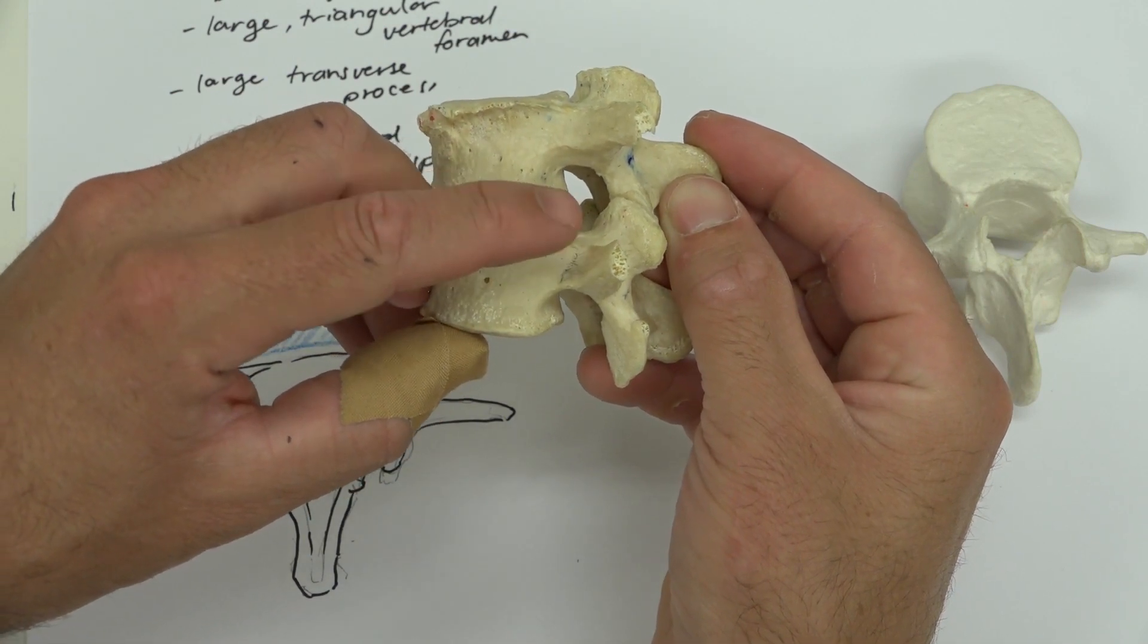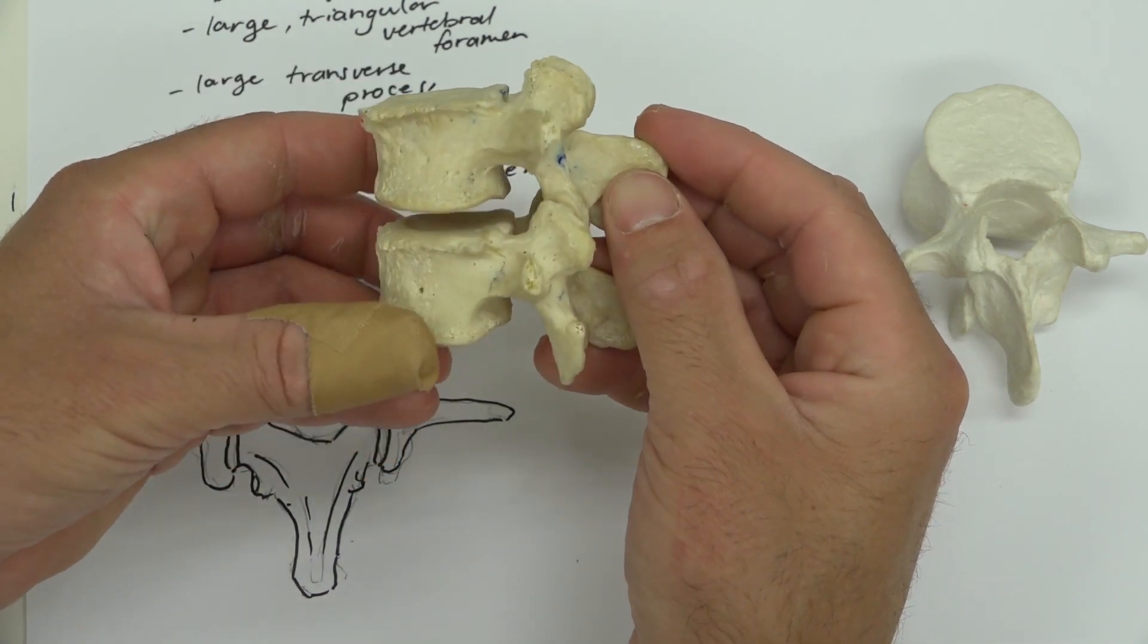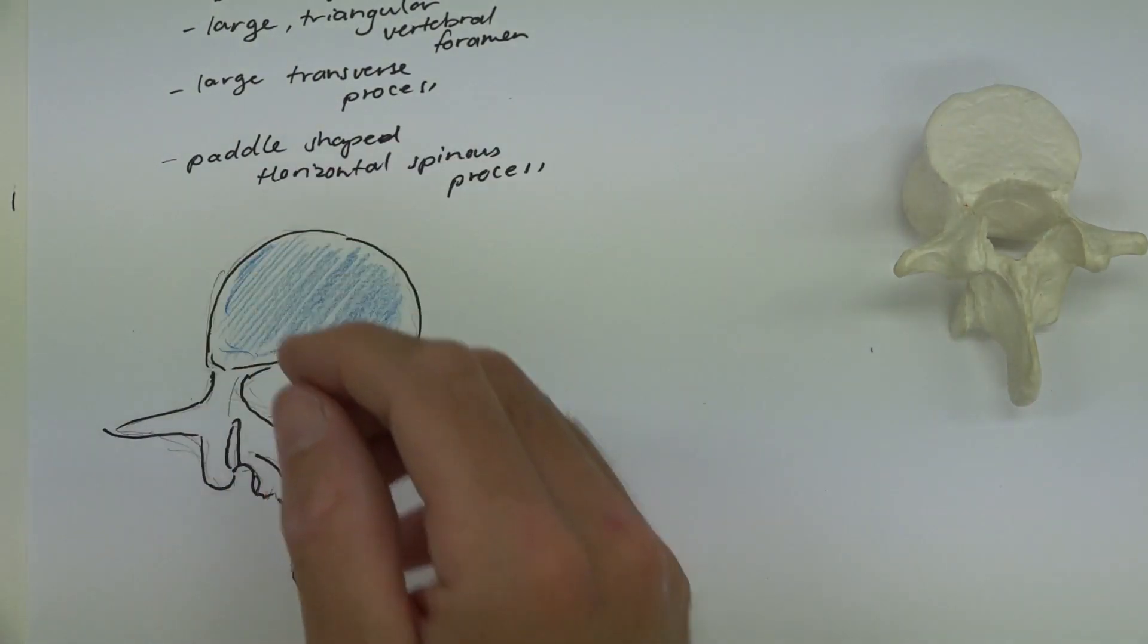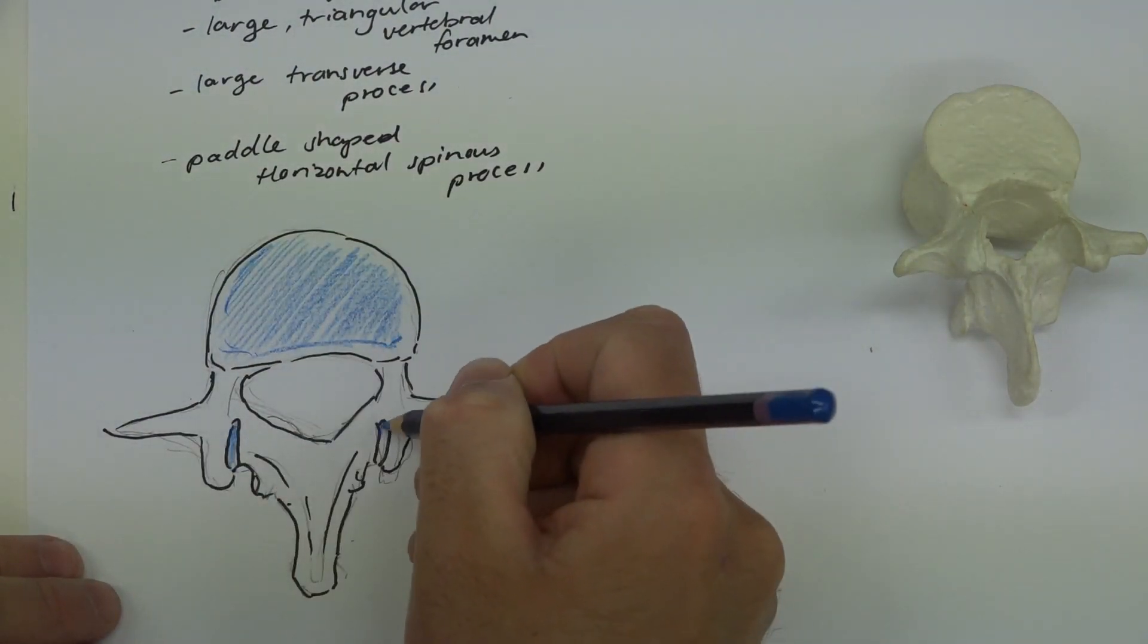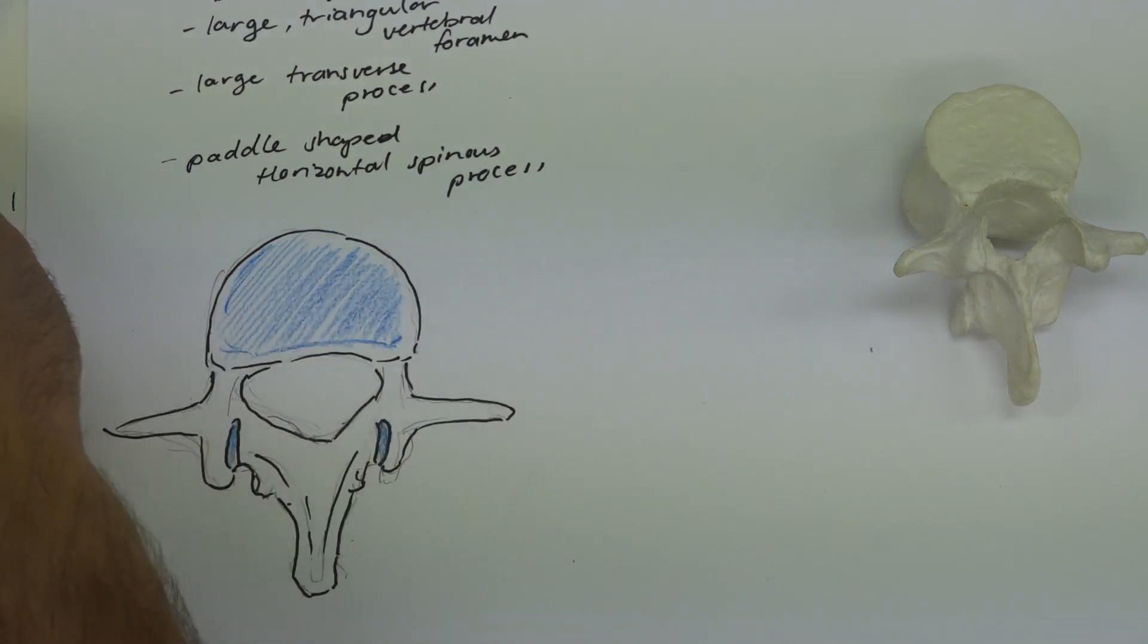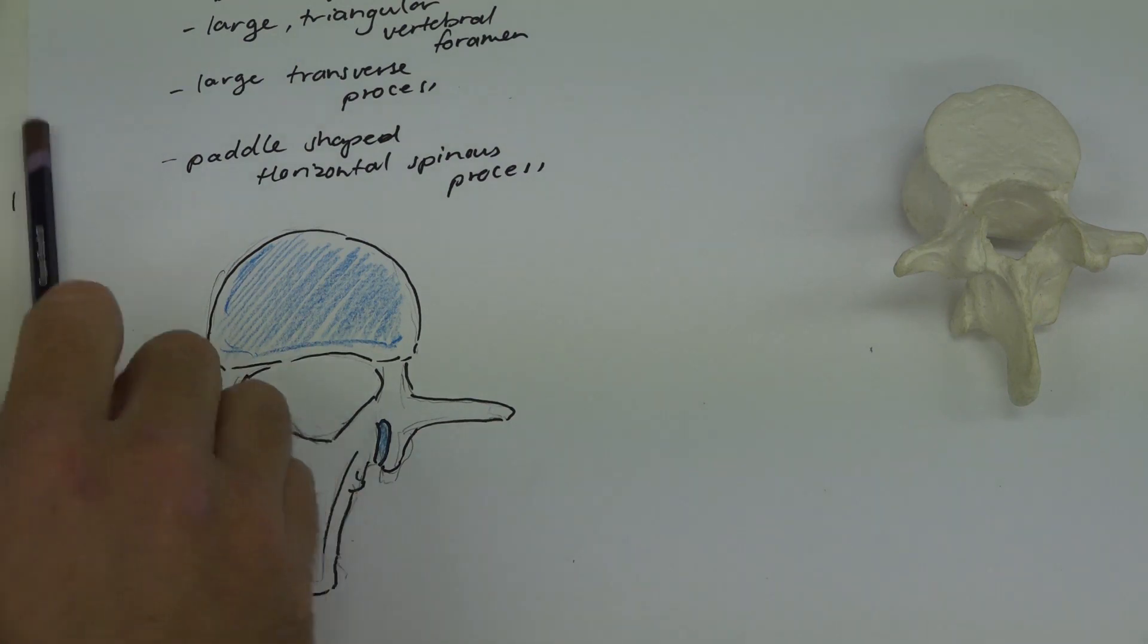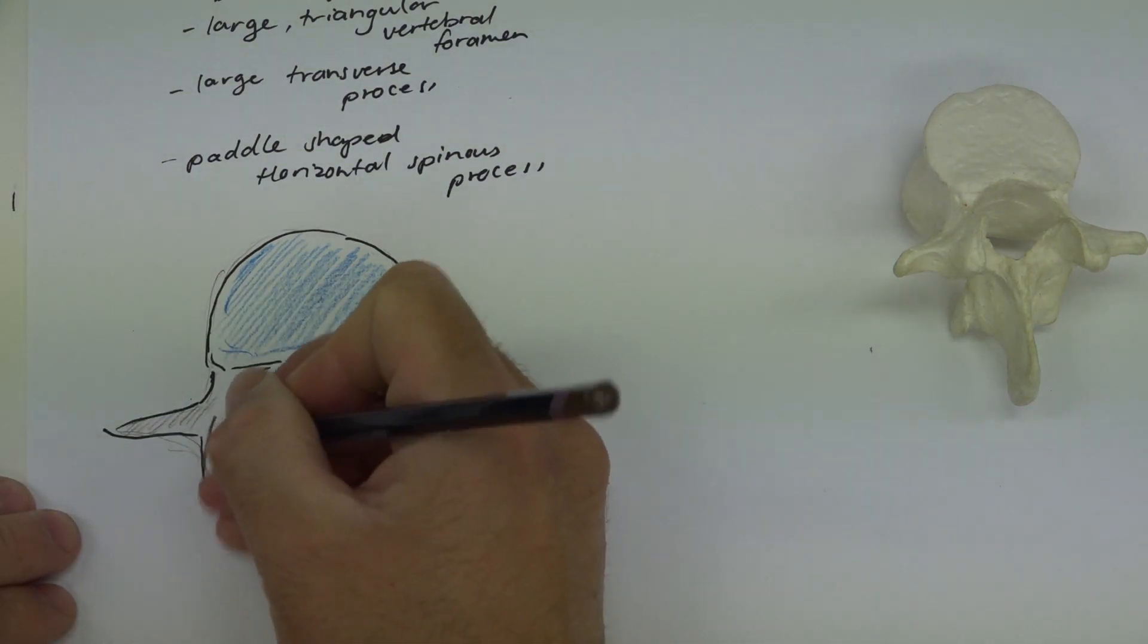And if the disc is to push backwards, it can then compress those nerves, and this can give you pain and some other problems down the leg. So then the other articular parts that we have are these ones here, those zygopophyseal or Z joints that we talked about, those articular facets, and the rest of the bone is just all bony structure.